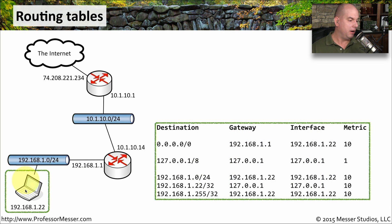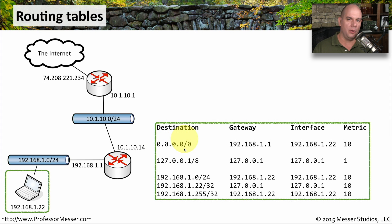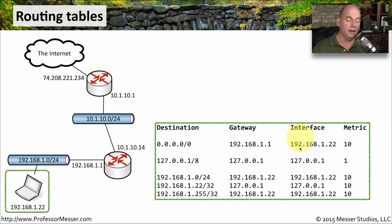Let's analyze the routing table on our computing device. If you're on a Windows device, you can type 'route print' at a command prompt and get a similar routing table. At the very top, the first destination is an all-zeros slash zero address — that is a default route. If no other route inside of this routing table matches the outgoing traffic, we default to this destination. The gateway to get to all other locations is 192.168.1.1, which is the router local to us on this subnet. The interface to get to that gateway is 192.168.1.22 — the IP address of the workstation — and the metric is 10.